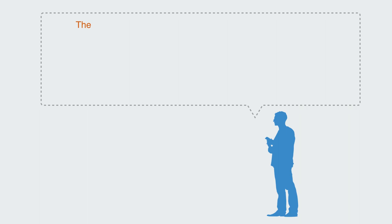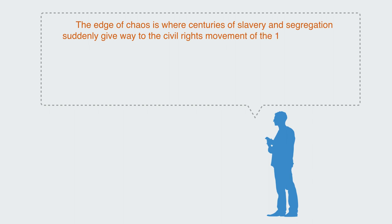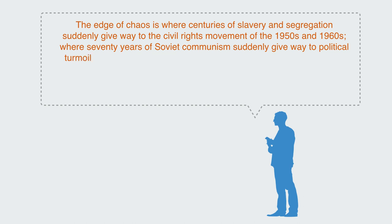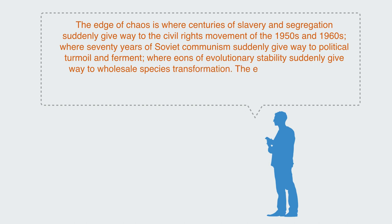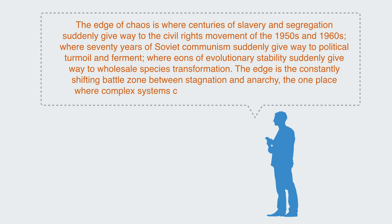The edge of chaos is where centuries of slavery and segregation suddenly gave way to the civil rights movement of the 1950s and 1960s, where 70 years of Soviet communism suddenly gave way to political turmoil and ferment, where eons of evolutionary stability suddenly give way to wholesale species transformation. The edge is the constantly shifting battle zone between stagnation and anarchy, the one place where complex systems can be spontaneous, adaptive, and alive.